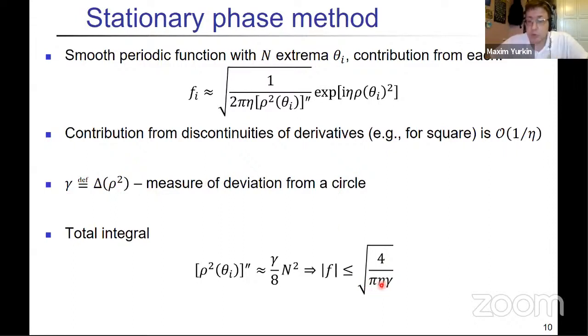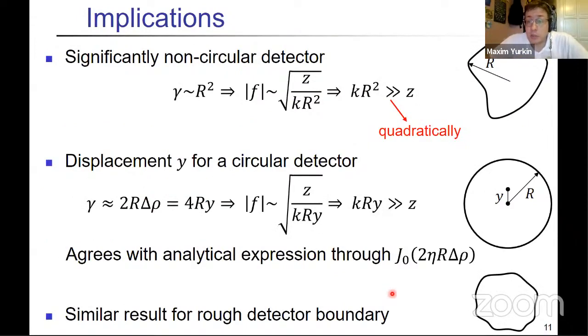Let us see the implications. First we consider some significantly non-circular detector like shown here, or a square for example. Then this gamma will be comparable to R squared, and that means that this correction integral f would be of this order. That means if you want it to be small you need this to be satisfied. However, this needs to be satisfied quadratically. What I mean by that is that if you want to have this correction of order one percent, then the difference between left and right hand side should be squared of that—it should be like 10,000 difference.